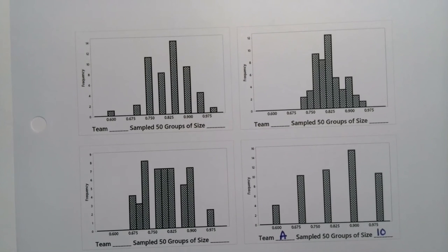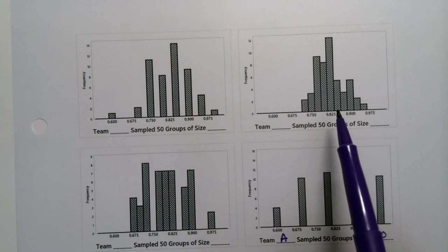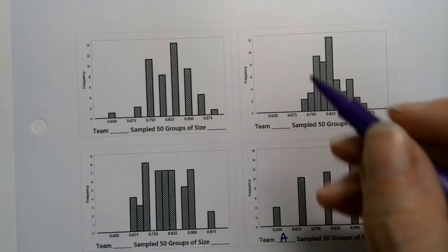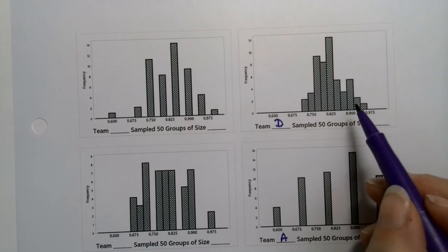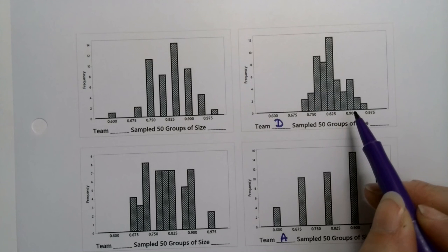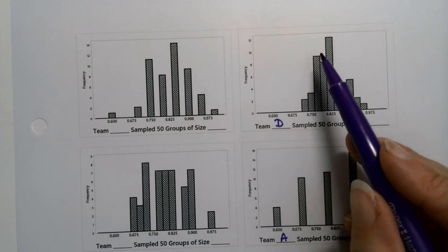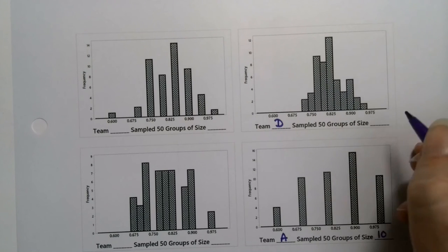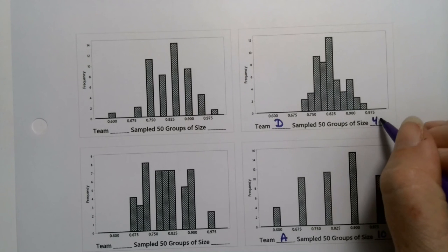Now what about the least spread? Again, I think it's obvious. It's this one right here. This is team D. It's the most compacted in, right? And also the most looking like a normal curve. Just kind of a sign. So this was sample size 40.